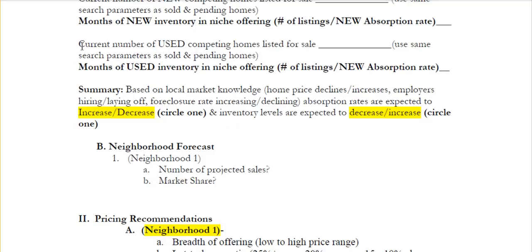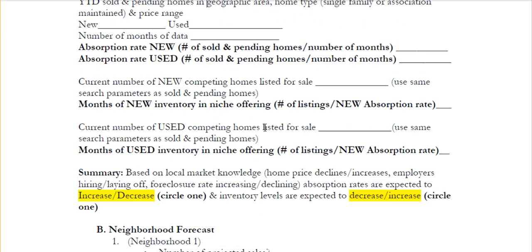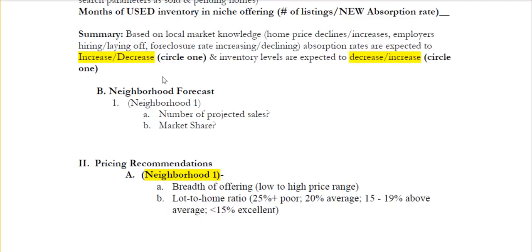Now we're going to look at summarizing your findings. Based on what you found and your local market knowledge, are absorption rates expected to increase or decrease, and are inventory levels expected to decrease or increase? Is there gas in the tank, in your opinion, to get more market share out of where you're currently looking? And if there isn't, that means you need to look at different markets. The last thing we'll do right now is look at neighborhood forecasts — for your particular neighborhood, how many projected sales are there and what percent of market share would that be? We'll come back next time with pricing recommendations. Happy selling.